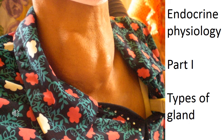An exocrine gland will export something from the gland via a duct. Exocrine glands produce their products and deposit them locally via ducts. Therefore, the product from an exocrine gland will act locally — it is not a systemic effect; it does not affect the whole body. The product is just deposited in or on part of the body and does not go directly into the bloodstream.